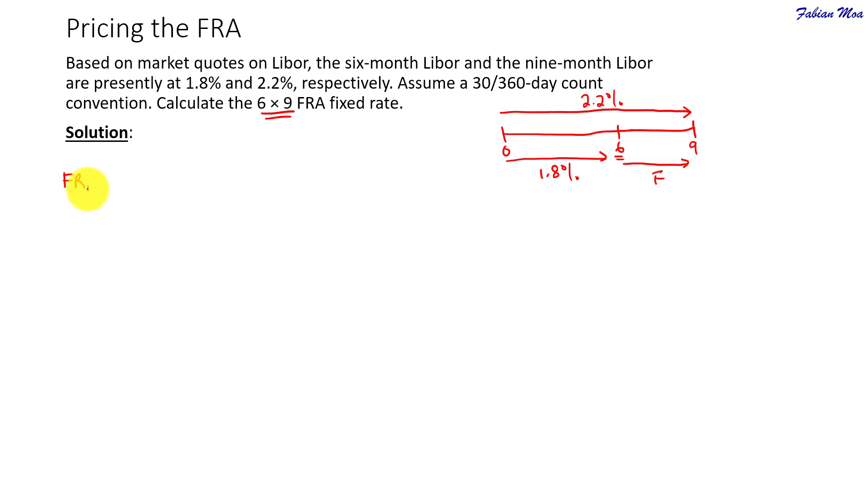So, to use the formula, the FRA rate will be equal to 1 plus the longer maturity LIBOR which is 2.2% and then you will multiply by the number of days which is now in 9 months. You can take 9 over 12.